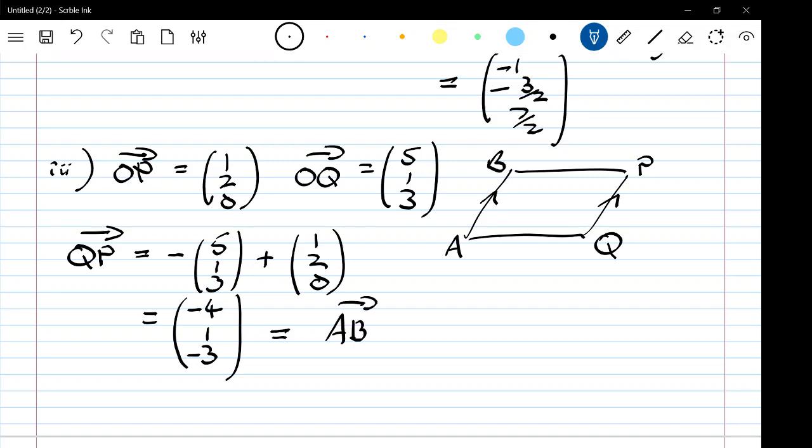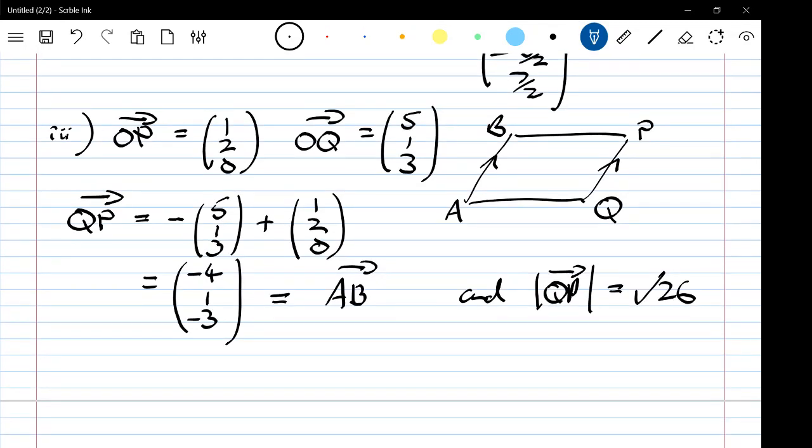Not only is it the same vector, but it's also the same length, because that is exactly the same vector. So QP and AB are parallel and the same length, therefore it must be a parallelogram.